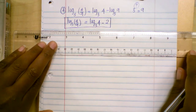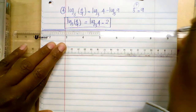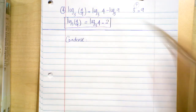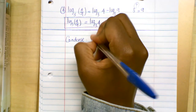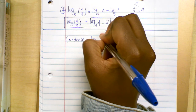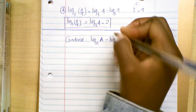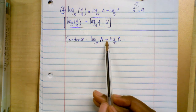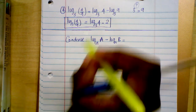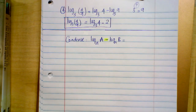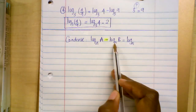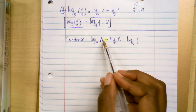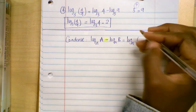Now let's move on to the condensed form. Condensed means going from two logs to a single log. If you have log base A of A minus log base A of B, and they share the same base, you can rewrite it as a single log: log base A of (A over B). Keep the same base and form the quotient of the two arguments.